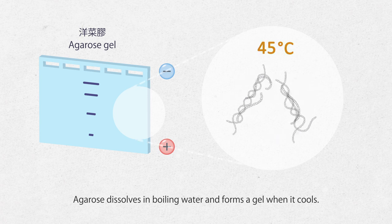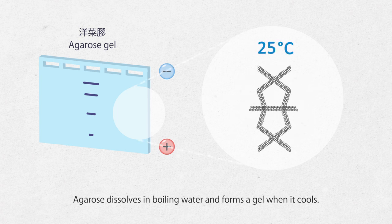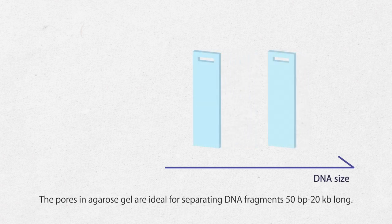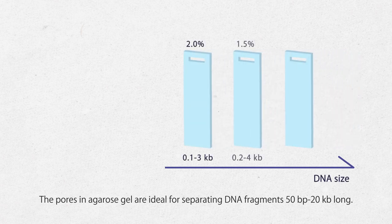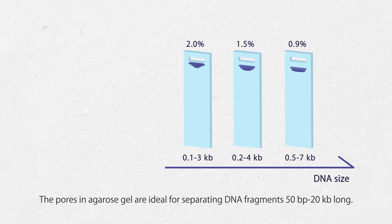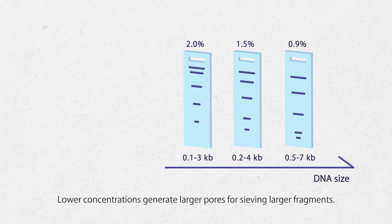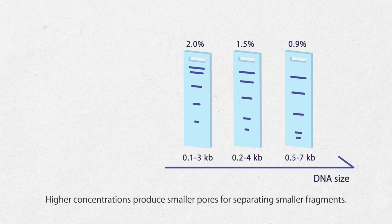Agarose dissolves in boiling water and forms a gel when it cools. The pores in agarose gel are ideal for separating DNA fragments 50 to 20,000 base pairs long. Pore size is determined by the concentration of the gel. Lower concentrations generate larger pores for sieving larger fragments. Higher concentrations produce smaller pores for separating smaller fragments.